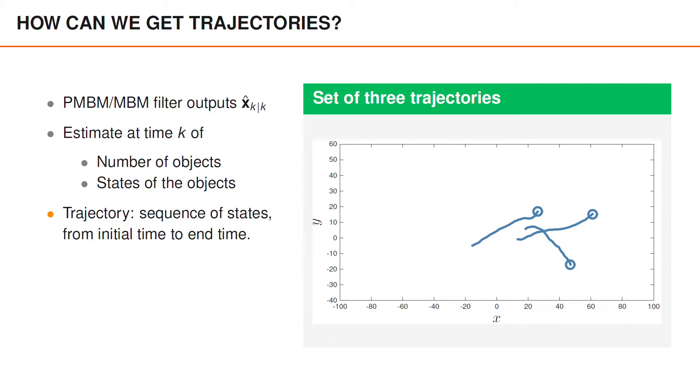A trajectory is defined as a sequence of states from some initial time to some end time, which might be the current time step or an earlier time step. So on the right, we have illustrated for each object its current position by a circle, and the past history of positions can be seen as the lines.